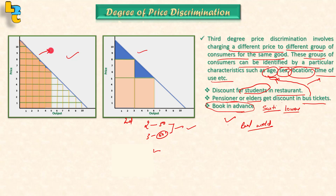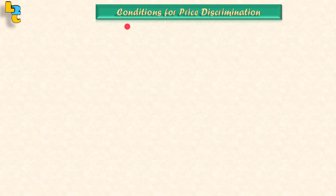In the first degree price discrimination case, the demand line is our marginal revenue curve, and the average revenue curve is also our marginal revenue curve. Now let's talk about the conditions for price discrimination. Price discrimination has three conditions: the first is that the seller should have market power.